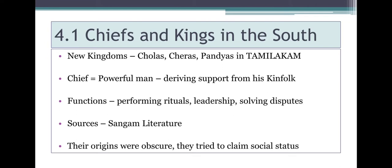Chiefs were emerging from different parts of the country. There were chiefdoms like the Satavahanas who ruled Western and Central India. Then there were Shakas, people of Central Asian origin, who established kingdoms at different places by deriving revenues from long-distance trade. Their social origin is very obscure — we are not sure about how they came into power, because there were no particular family lines or hereditary ruling lines. So to acquire power, they attempted to claim social status in a variety of ways.